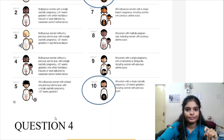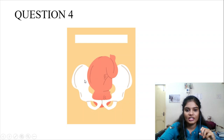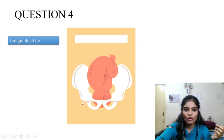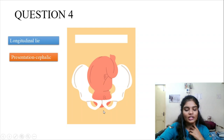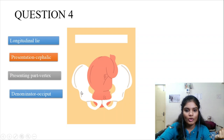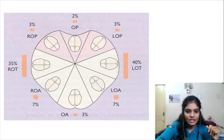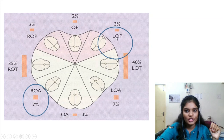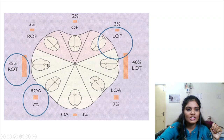Question number 4 is a picture question about fetal position. Whenever you get a picture question asking about position, first identify the lie — here it is longitudinal. Second, the presentation — cephalic. Third, the presenting part — vertex. Fourth, the denominator for vertex presentation is the occiput. Then see where the occiput is: if near the pubic symphysis it is anterior; towards the right of the maternal pelvis is right occiput anterior (ROA); towards the left is left occiput anterior (LOA). If near the sacrum, it is occiput posterior — right is ROP, left is LOP. If transverse, it is right or left occiput transverse (ROT/LOT).